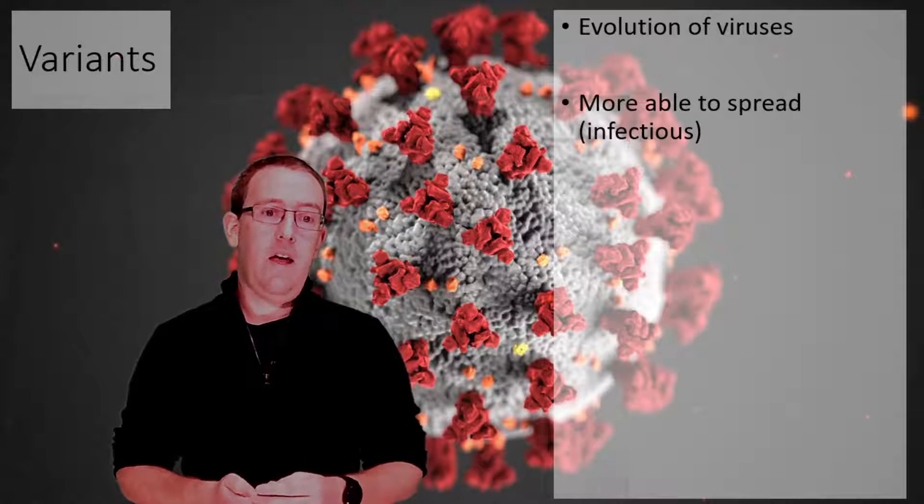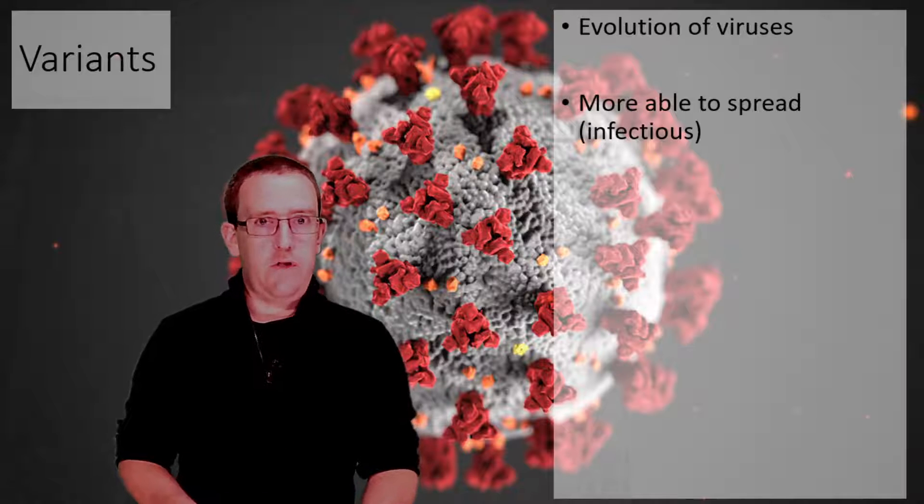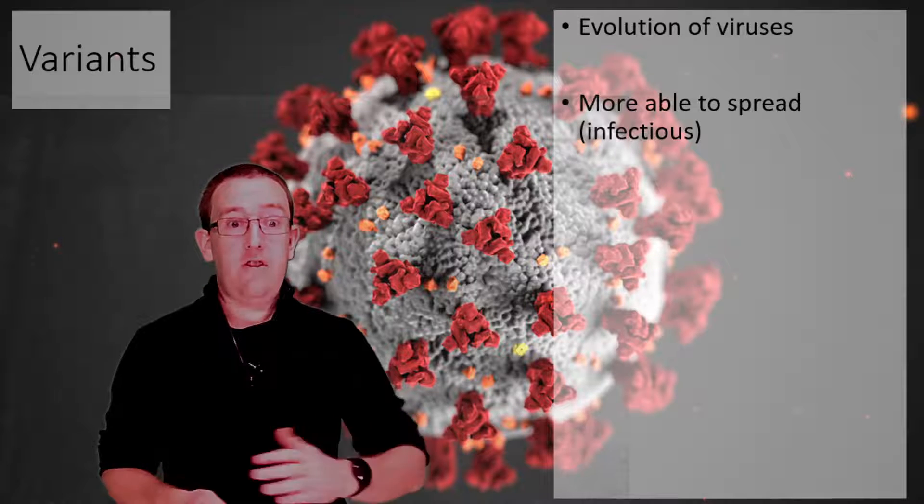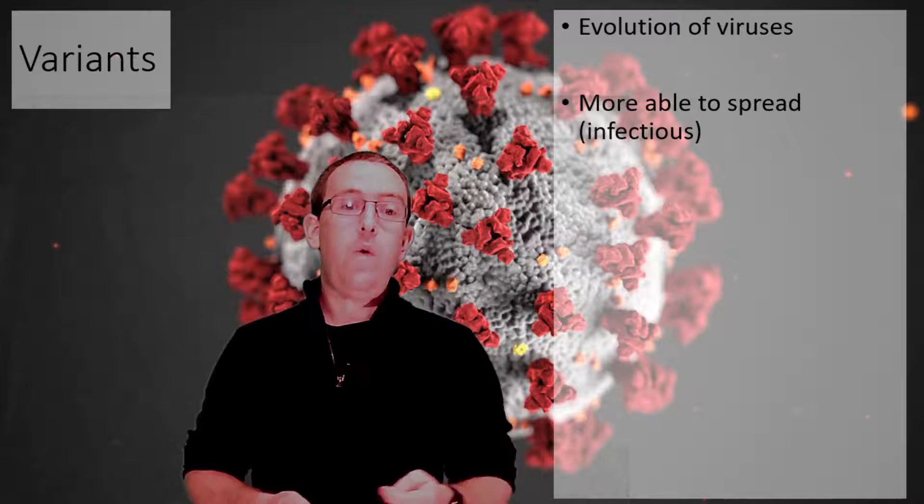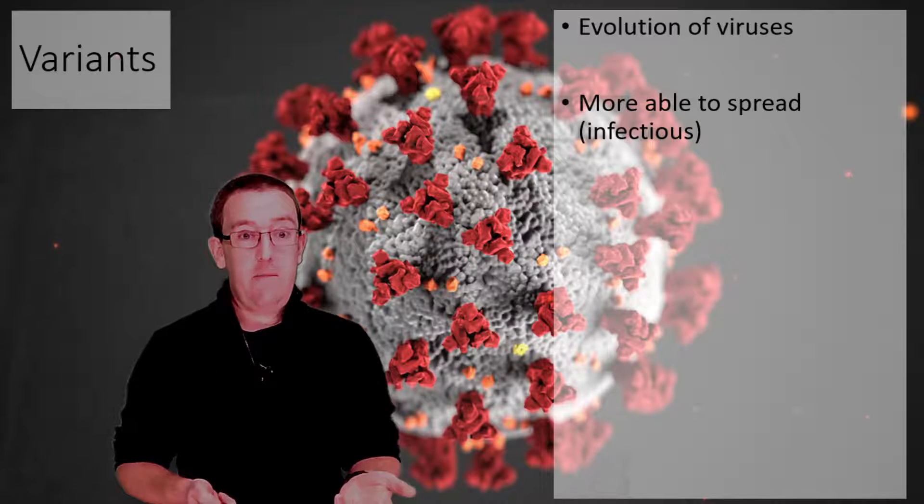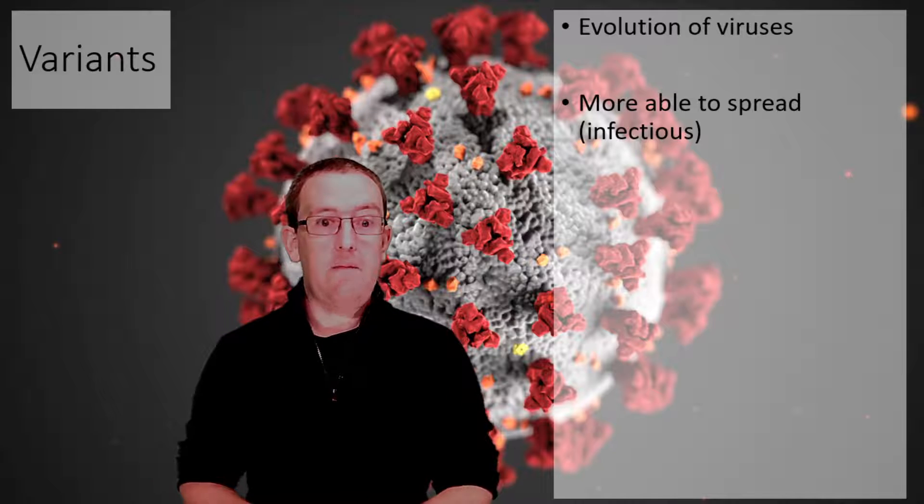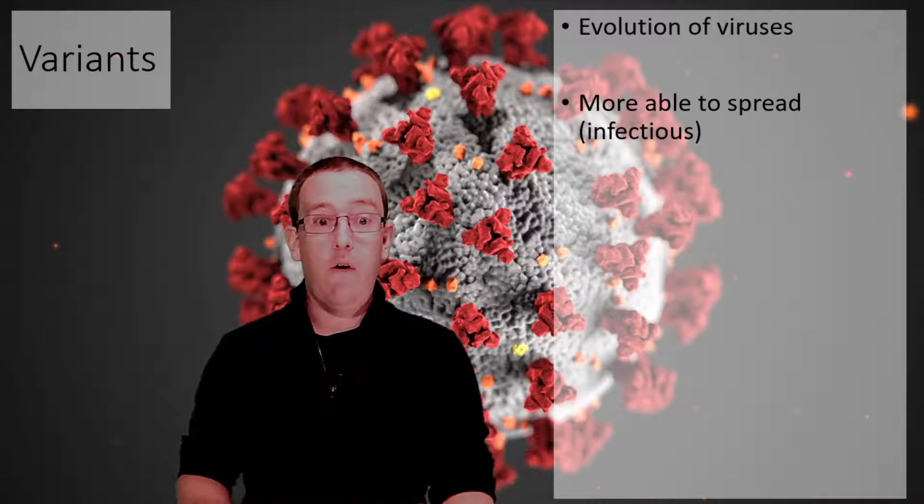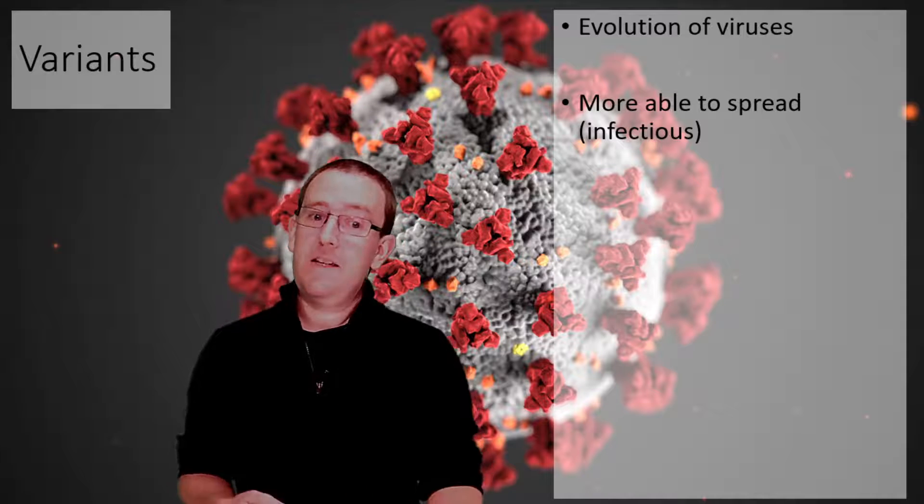Mutations happen all the time because viral replication is extremely messy and inaccurate. However, we don't notice most variants because they either die immediately or don't give the virus any benefit. Maybe someone doing RNA sequencing in the UK would notice, but they wouldn't be of any interest.